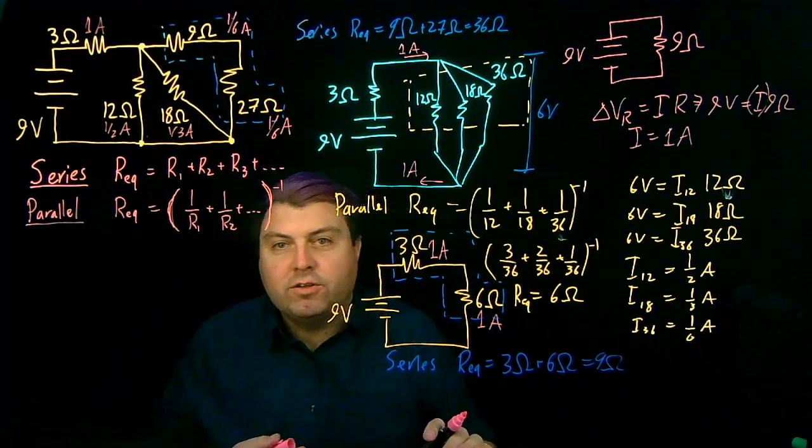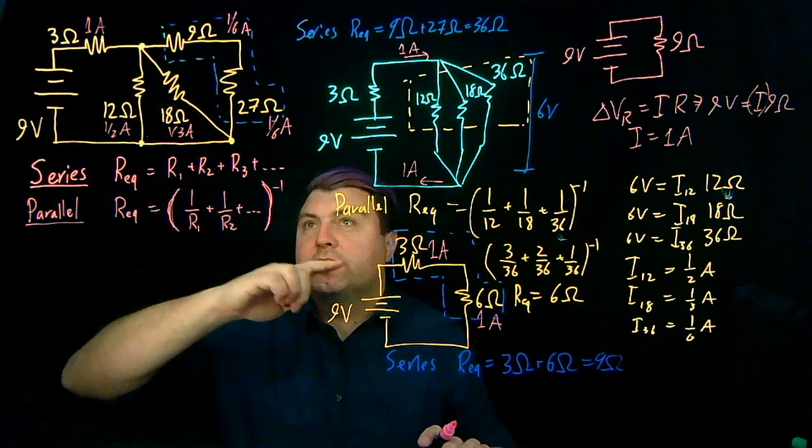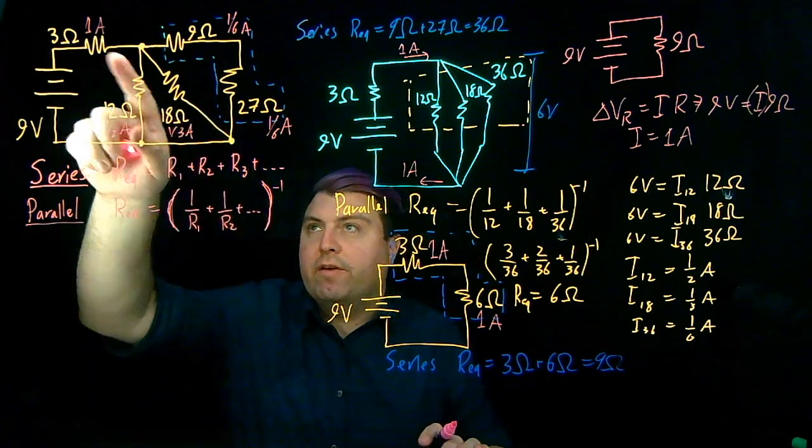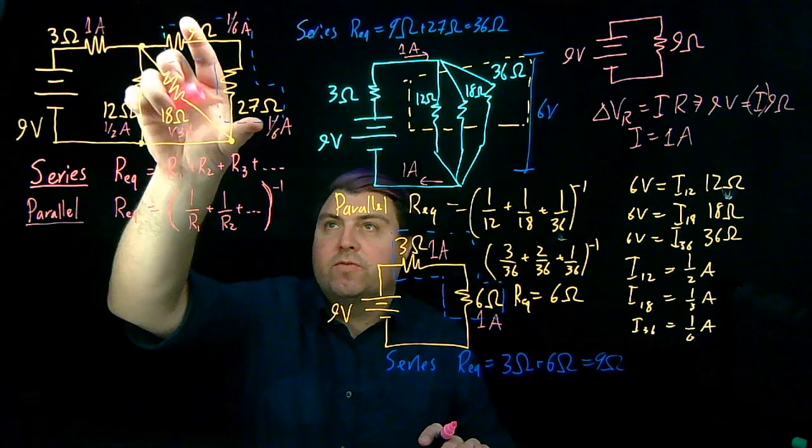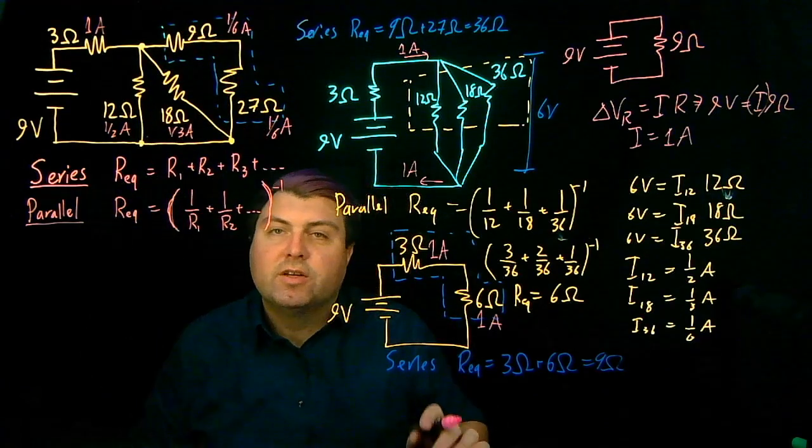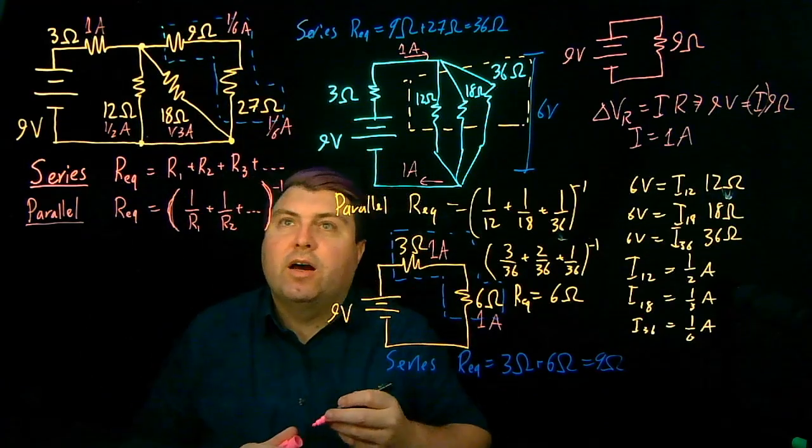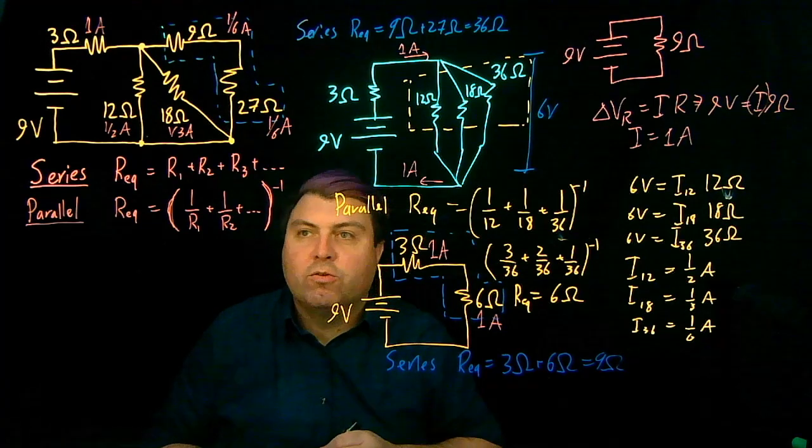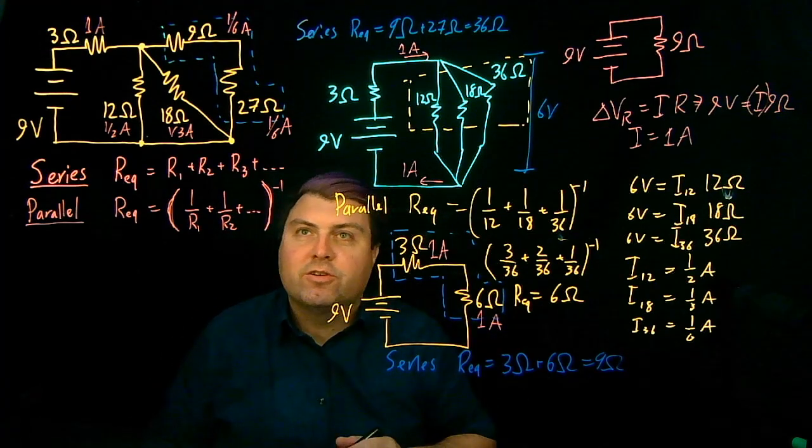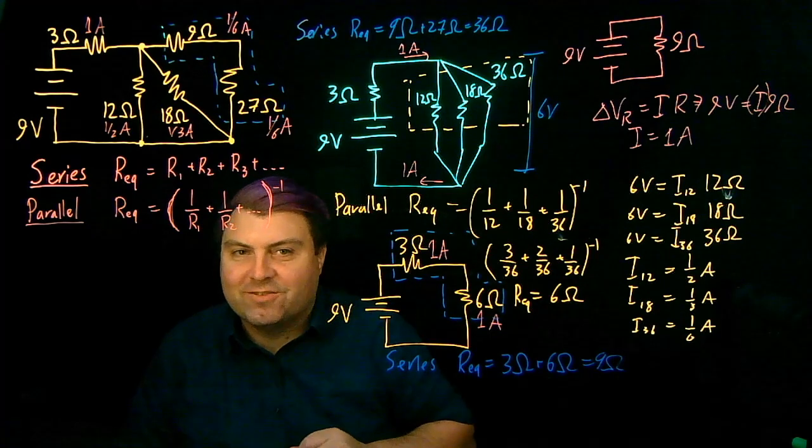And then if we want to, we can then calculate the voltage difference over these individually. But we have 3 volts, 6 volts, 6 volts, and the combination of these is 6 volts. And so then this will be 6 quarters, and this will be 18 quarters. Kind of ugly, but that's fine.